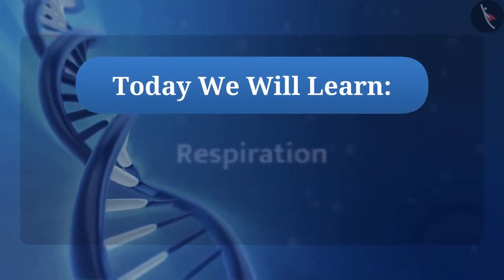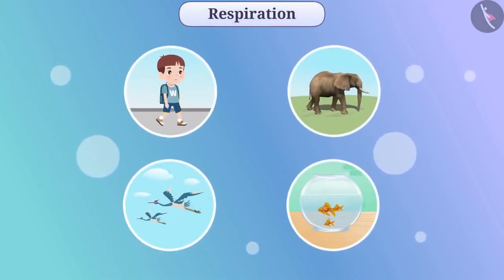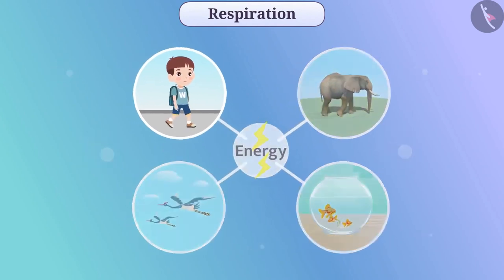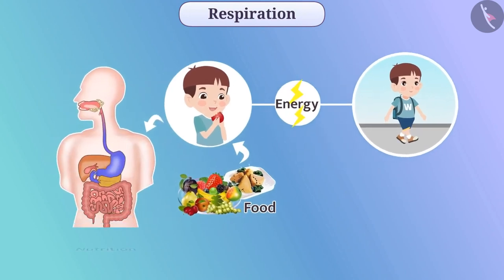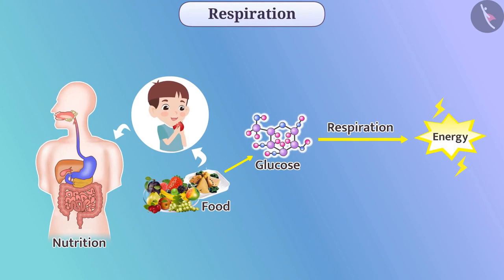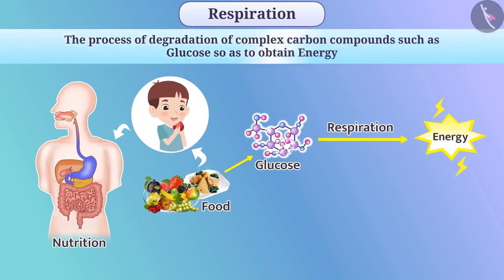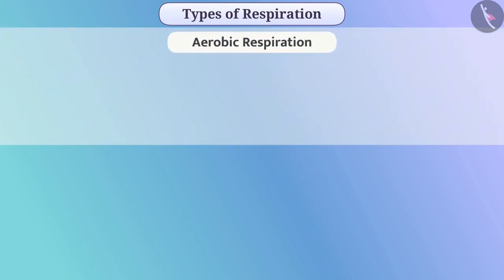Today we will learn about respiration. In the previous video, we learned that living beings need energy to do different tasks, and this energy is obtained from food. Living beings obtain their food through the process of nutrition. For the production of energy from food, the process of respiration is important. The process of degradation of complex carbon compounds such as glucose to obtain energy is called respiration. Depending on the need of oxygen, respiration can be divided into two types: aerobic respiration and anaerobic respiration.